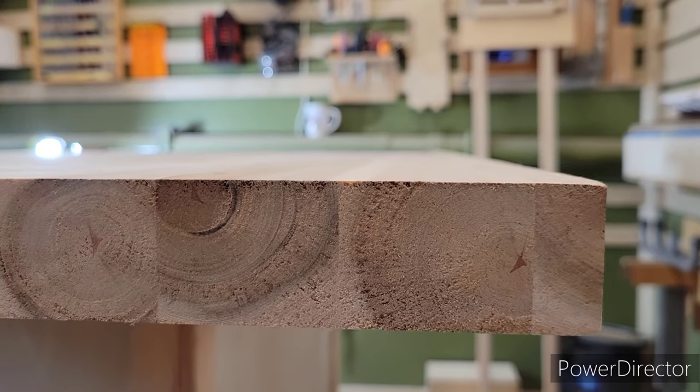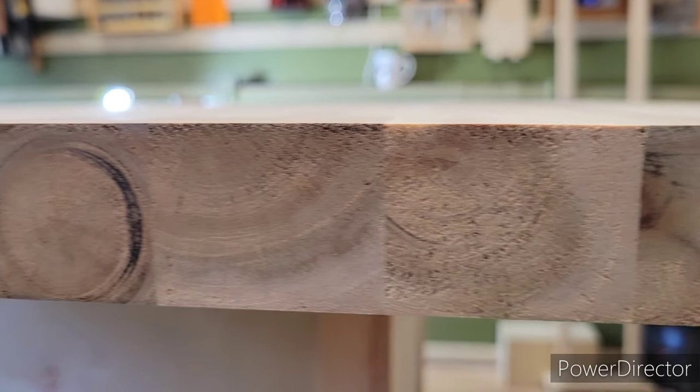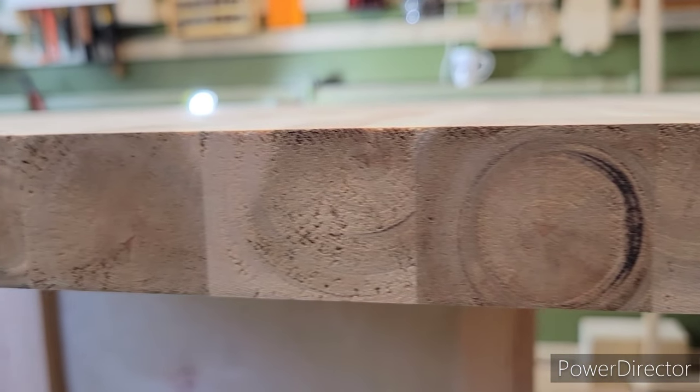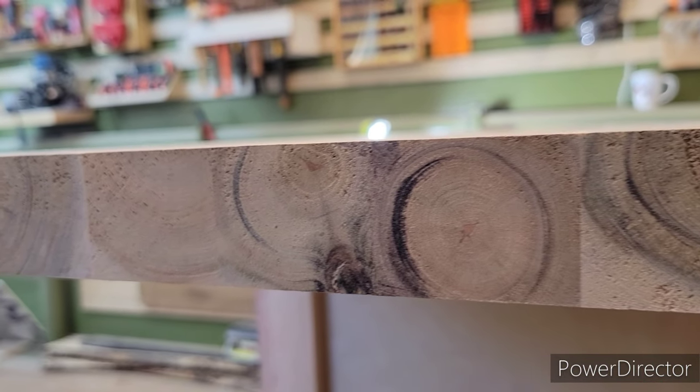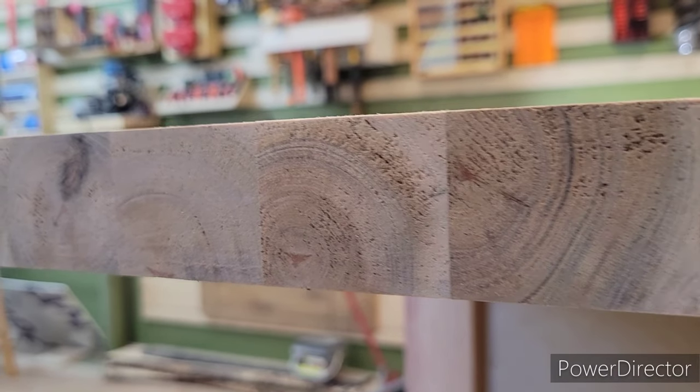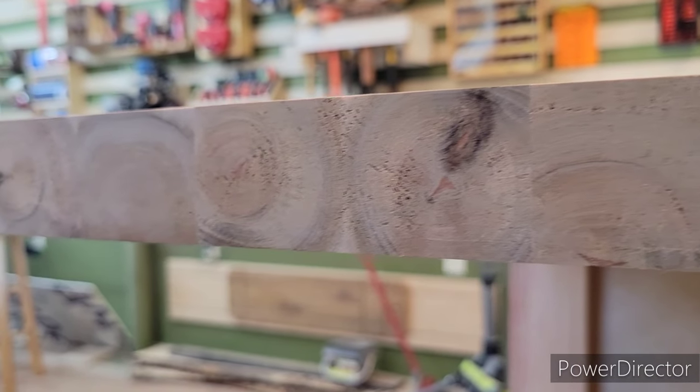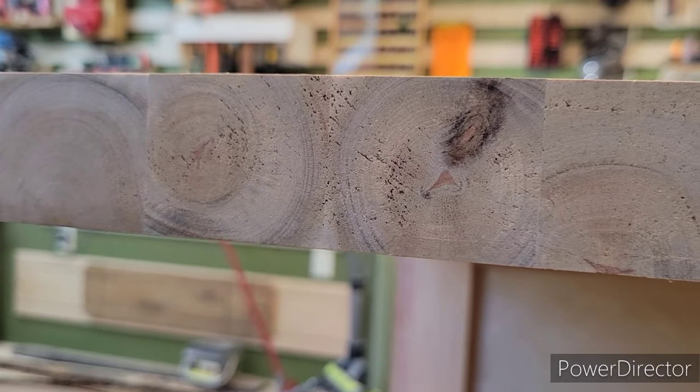So here is the end grain. Typically when I cut a board, even on the end grain, it's smoother than this. I mean, I've cut pine boards that came out smoother than this. So I don't know if it's their blade or not. I haven't cut this yet. I'll find out here soon whenever I start cutting this.